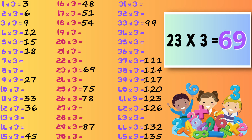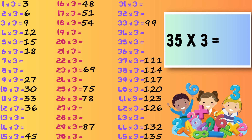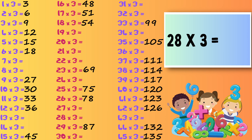Ten times three — thirty. Thirty-five times three — one hundred and five. Twenty-eight times three — eighty-four.